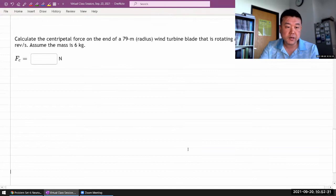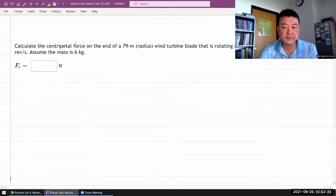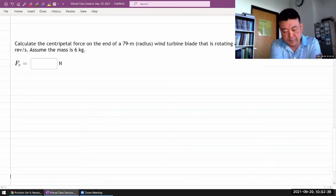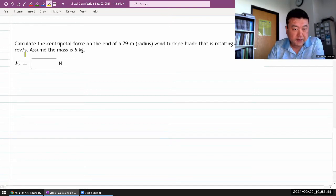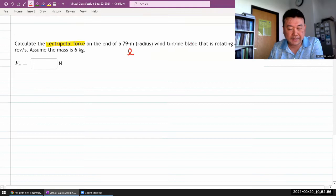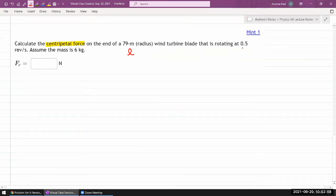This is really a single question asking you to memorize one formula. It asks you to calculate the centripetal force on the end of some length, radius, wind turbine blade that is rotating at 0.5 revolutions per second.